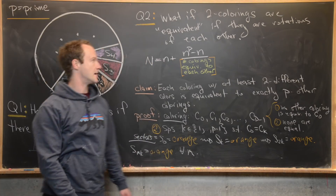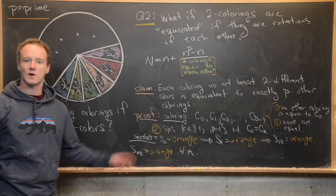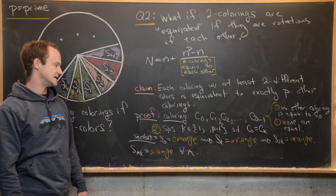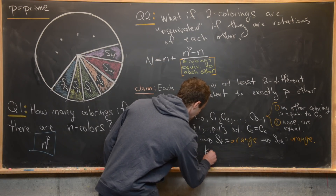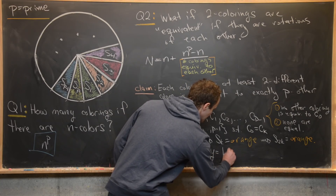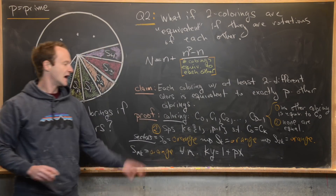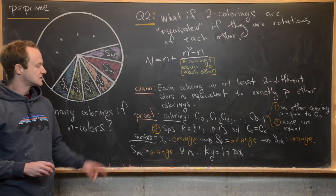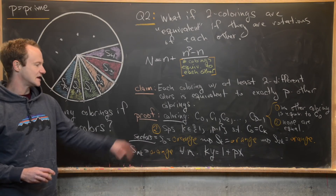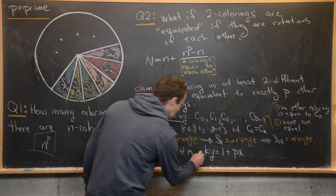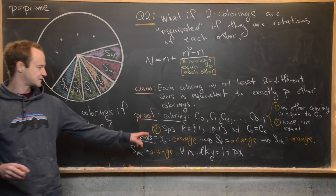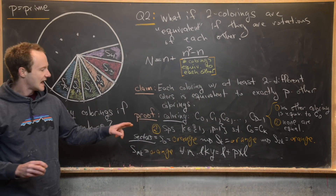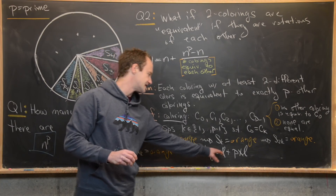Now since P is prime and K is in the set 1 to P minus 1, K and P are relatively prime. By Bezout's identity, there exist natural numbers X and Y such that K times Y equals 1 plus P times X. Next, we multiply this equation by L, where L is any number between 1 and P minus 1, on both sides.